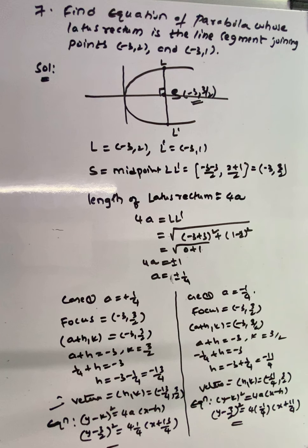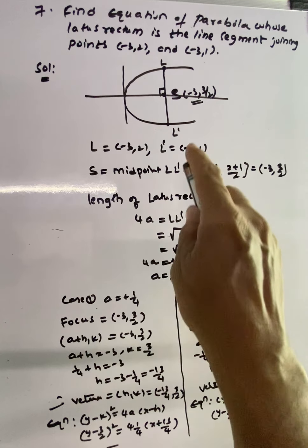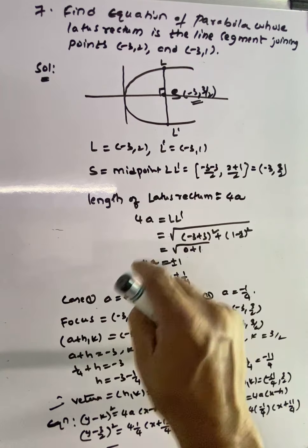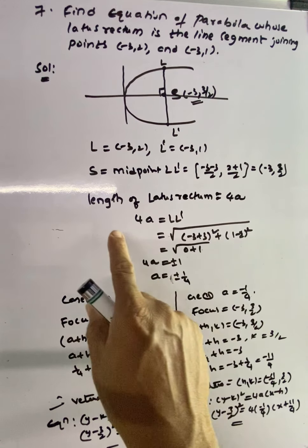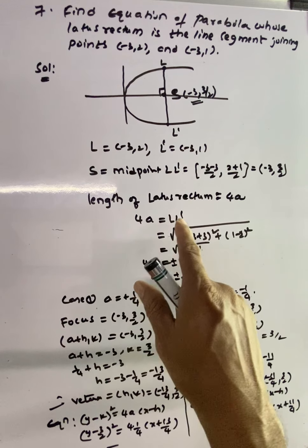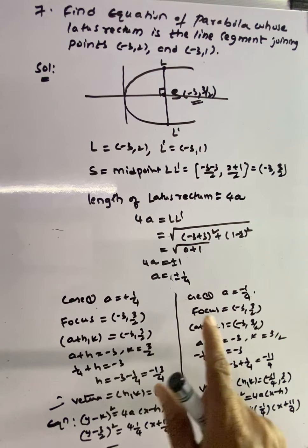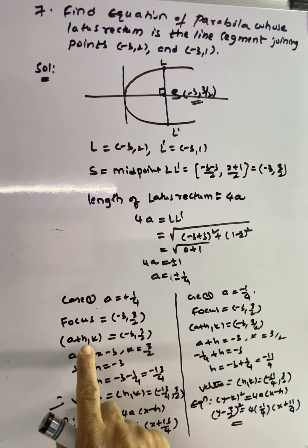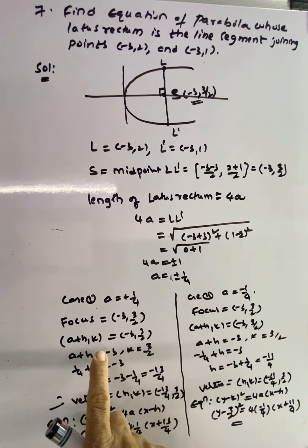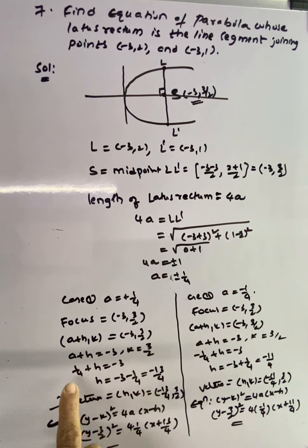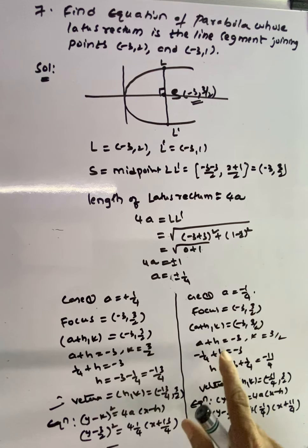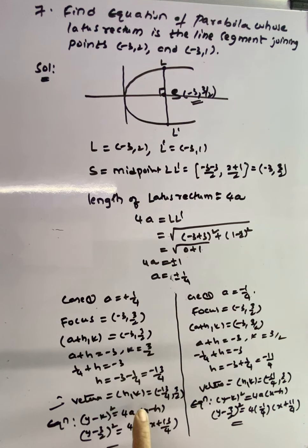Summary for latus rectum problems: First draw the parabola and find focus S by taking midpoint of LL'. Then use 4a = length of LL' to find a — two cases arise (±). For each case, use the focus formula to find vertex (h, k), then substitute into (y - k)² = 4a(x - h) to get both equations of the parabola.